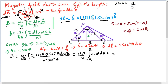And a over r is also cosine of theta, since cosine theta equals adjacent side over hypotenuse, which is a over r. So instead of sine of alpha, I can write cosine of theta.